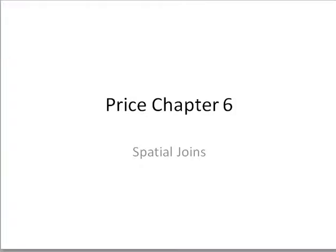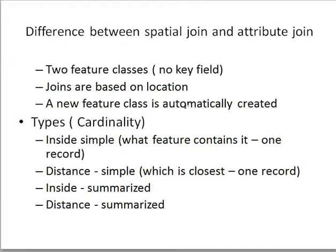Chapter six is spatial joins. The difference between spatial joins and attribute joins is that attribute joins require a key field — you need two tables and a key field. But with spatial joins, you can join between two feature classes without a key field because your join is based on location.